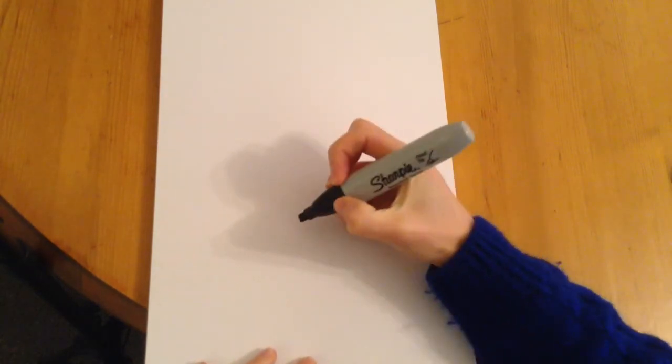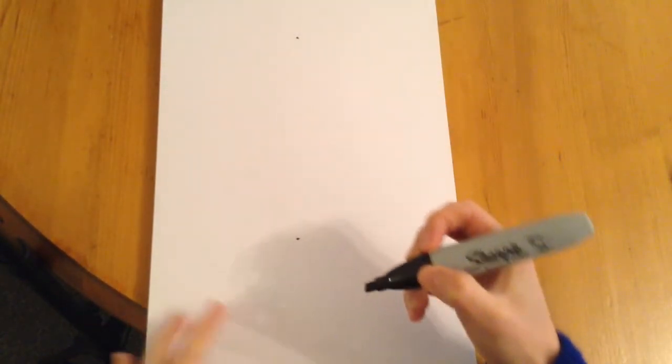First of all, we're going to mark out how big we think we're going to do the monkey. So I'm just going to put a little dot down the bottom and a little dot at the top where I'm going to start and finish the monkey.